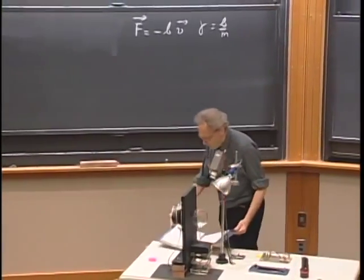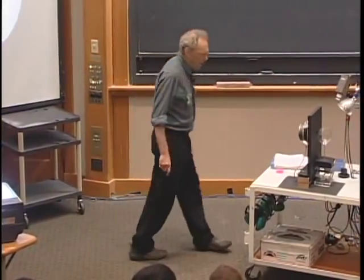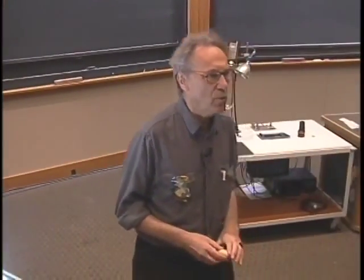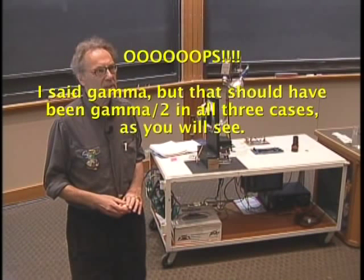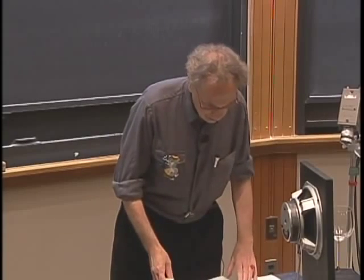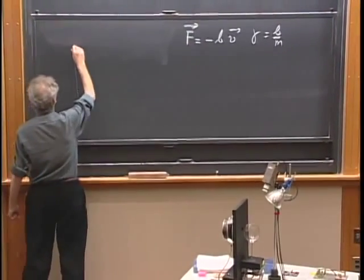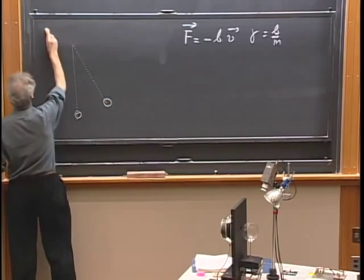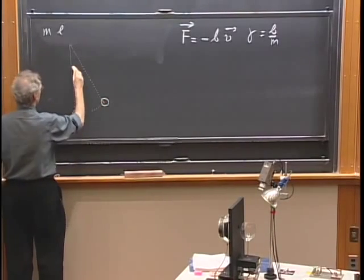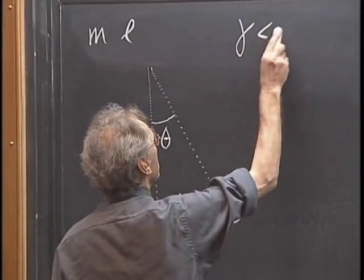When you deal with damping, we recognize three different domains. One domain where gamma is smaller than omega zero — we call that underdamped. Then a domain where gamma is larger than omega zero — we call that overdamped. And then a very special case where gamma equals omega zero. The behavior of these three different kinds is very different. I will only discuss the underdamped case today.